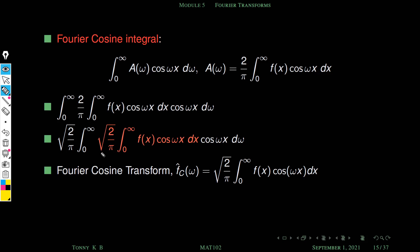We define this portion as the Fourier cosine transform of f(x). We denote it as F̂_c(ω), because after integration with respect to x, this becomes a function of ω. The 'c' stands for cosine transform, and the hat notation means this is the cosine transform of the function f.